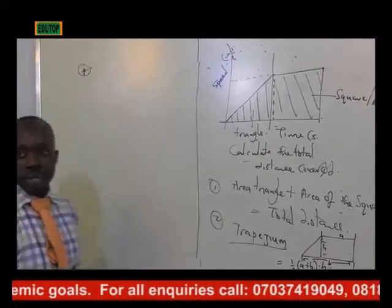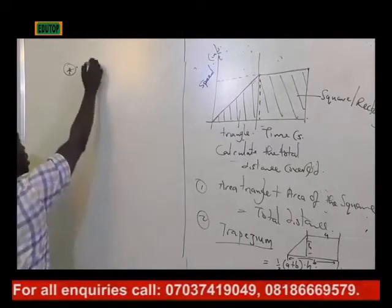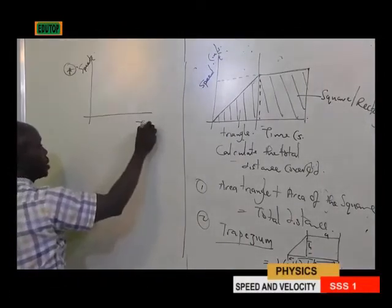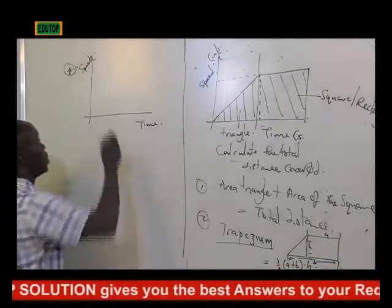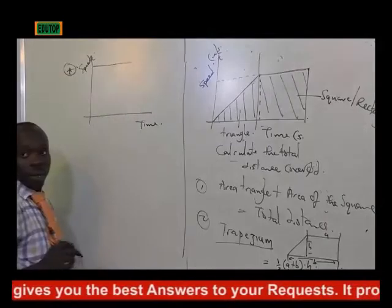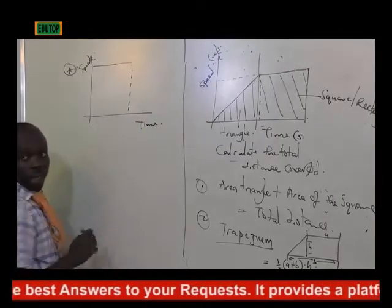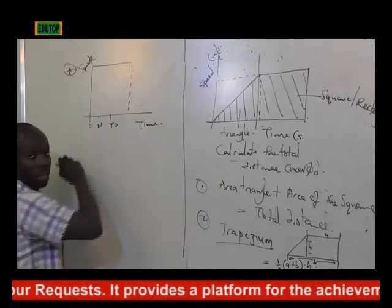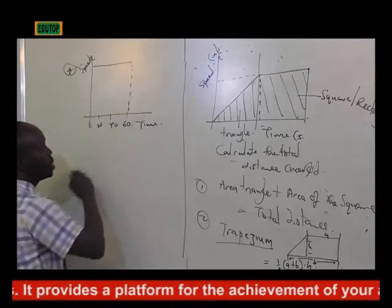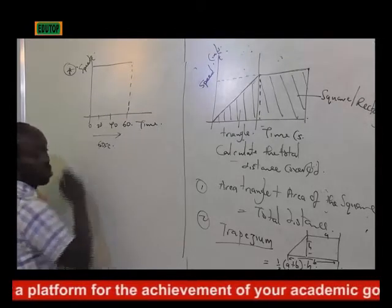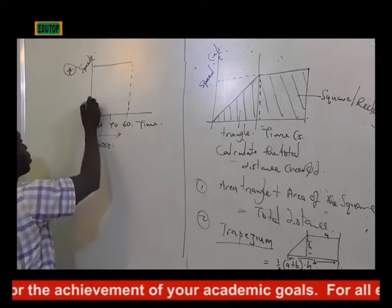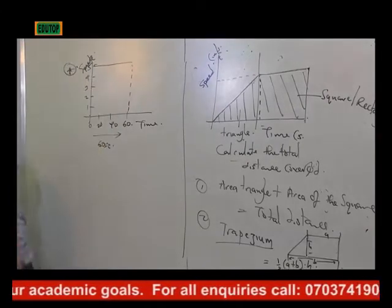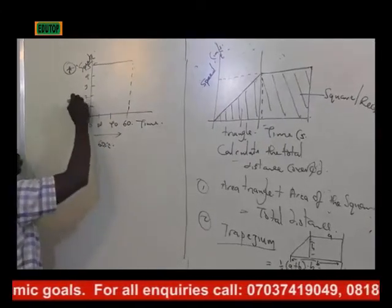Now we are told: look at that shape — it's a graph of speed against time. The body is at constant speed. It stopped here. The time covered is 0, 20, 40, and 60 seconds, so total time covered is 60 seconds. The speed values are 1, 2, 3, 4, 5 — total speed is 5 meters per second.